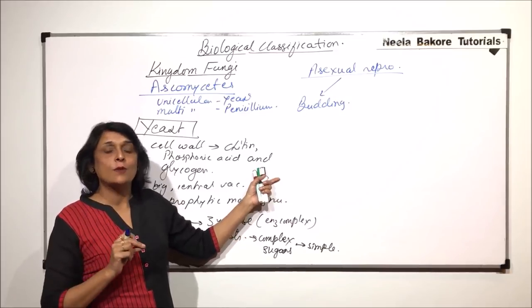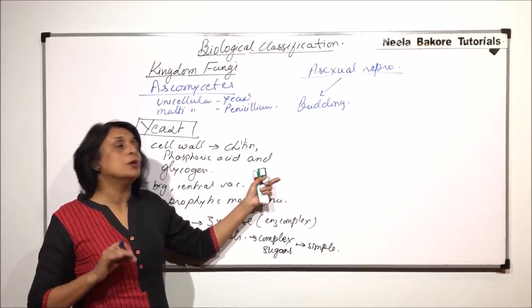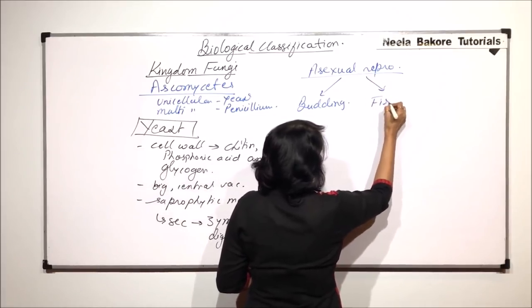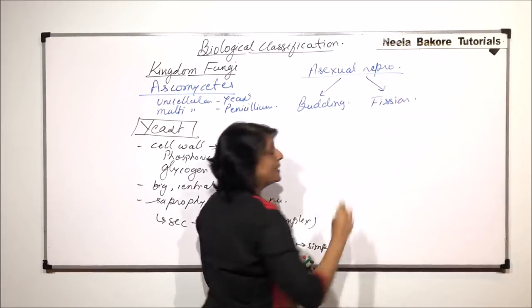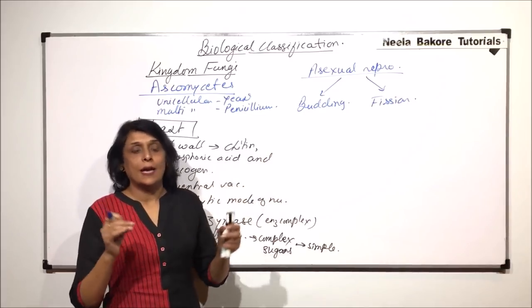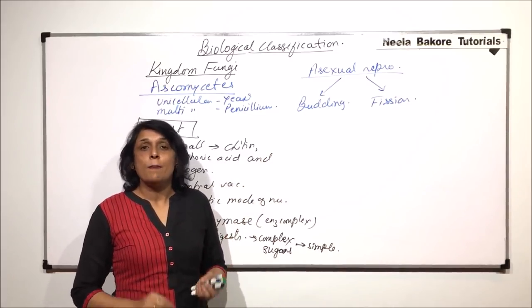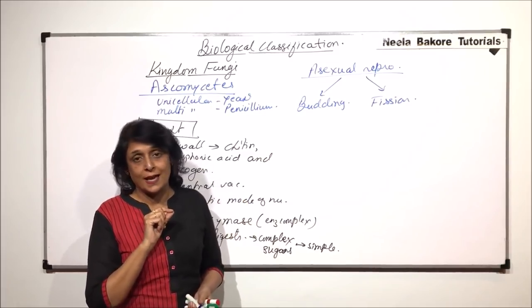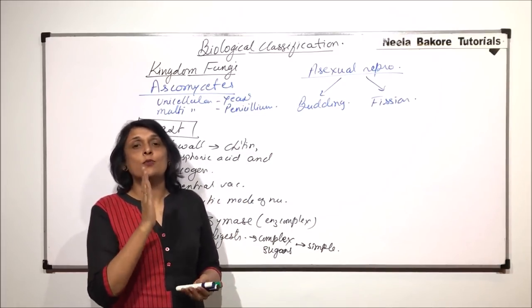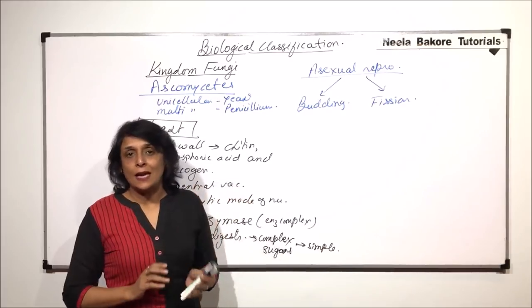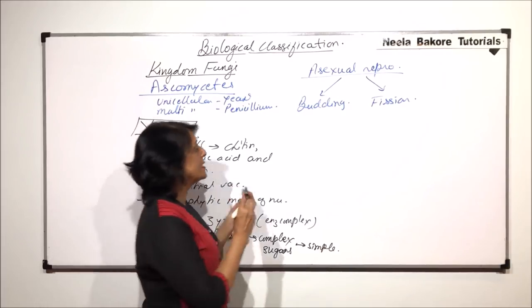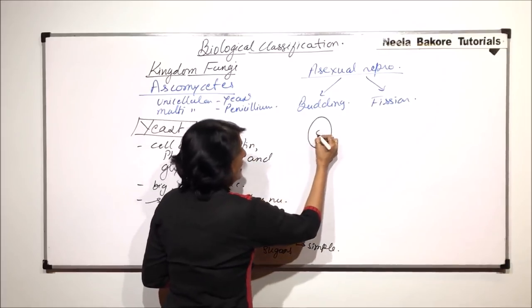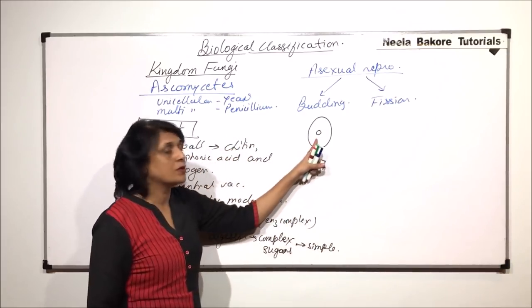So, it is going to detach and it will start leading its life as an individual cell. The second method is fission. Where the cell actually elongates, the nucleus divides by first elongation. Then a constriction appears inside and then there is a plate which is going to separate the cytoplasm.